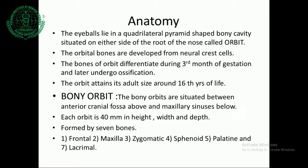What is the bony orbit? The bony orbits are situated between the anterior cranial fossa above and maxillary sinuses below. Each orbit is approximately 40 mm in height, width, and depth. The orbit is formed by seven bones: frontal, maxilla, zygomatic, sphenoid, palatine, and lacrimal.